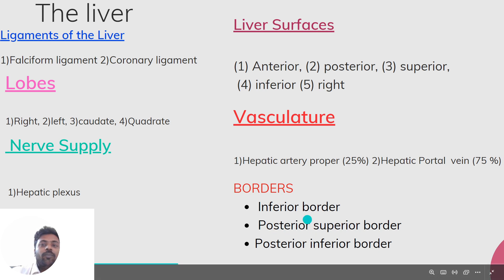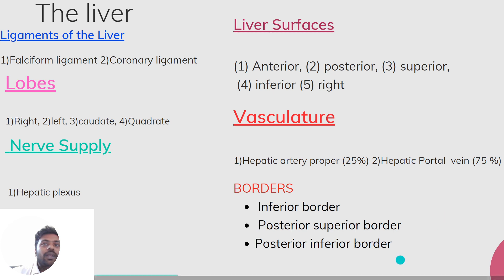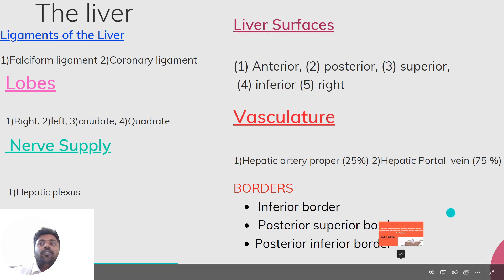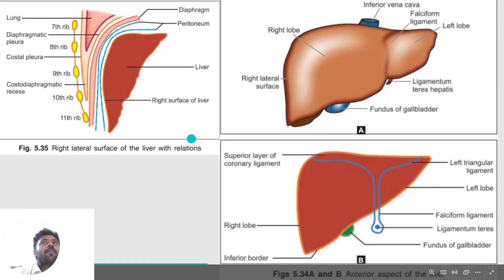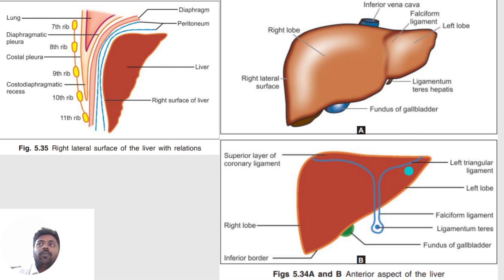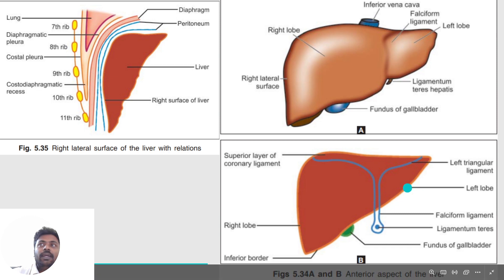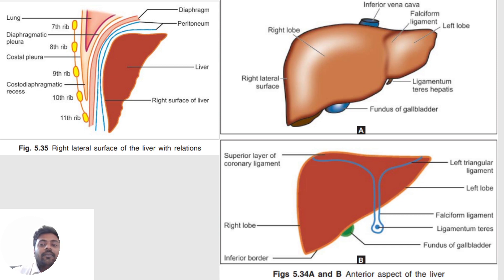Let's discuss about the borders of the liver. The first one is the inferior border, followed by the posterior superior border and posterior inferior border. The inferior border is the sharp and prominent border, directed anteroinferiorly, and separates the anterior surface from the inferior surface.